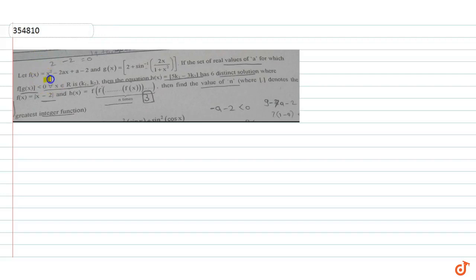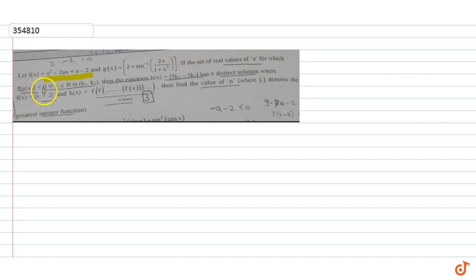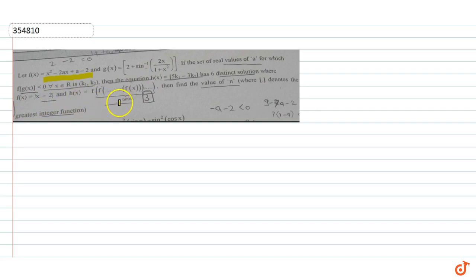Let f(x) = x² - 2ax + a - 2, and g(x) = greatest integer function of [2 + sin⁻¹(2x/(1+x²))]. If the set of real values of 'a' for which f(g(x)) < 0 for all x ∈ ℝ is (k1, k2), then the equation h(x) = 5k1 - 3k2 has 6 distinct solutions, where f(x) = |x - 2| and h(x) = f(f(...f(x)...)) applied n times. Find the value of n.